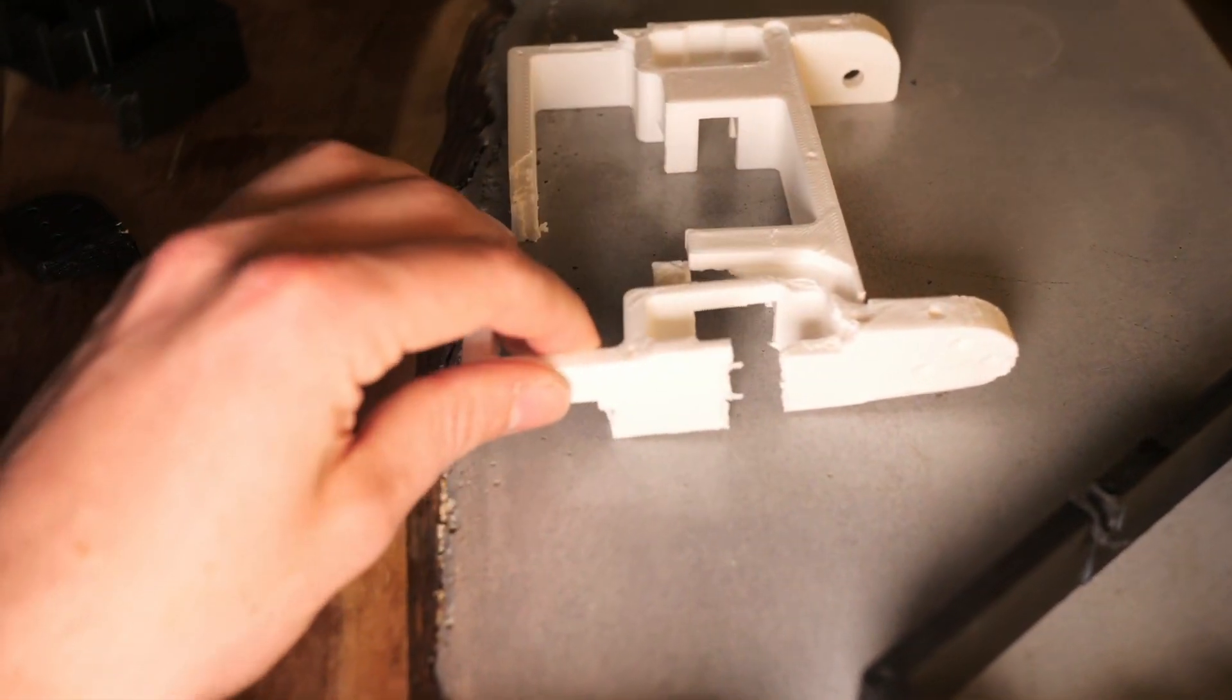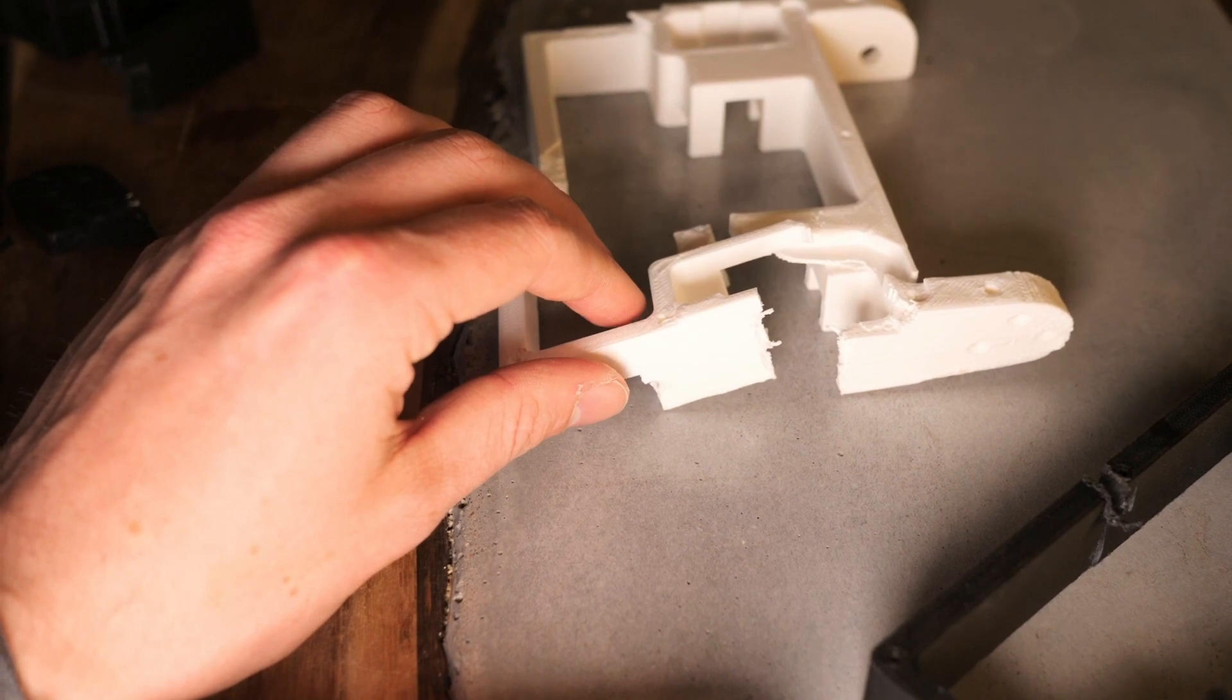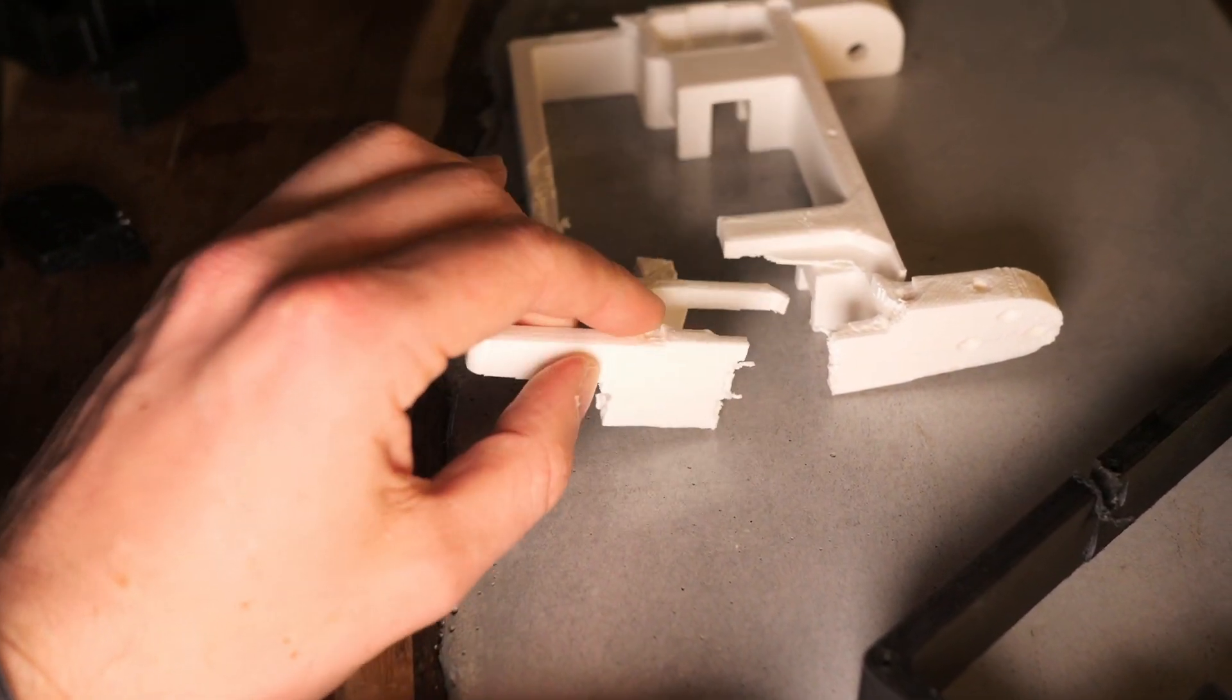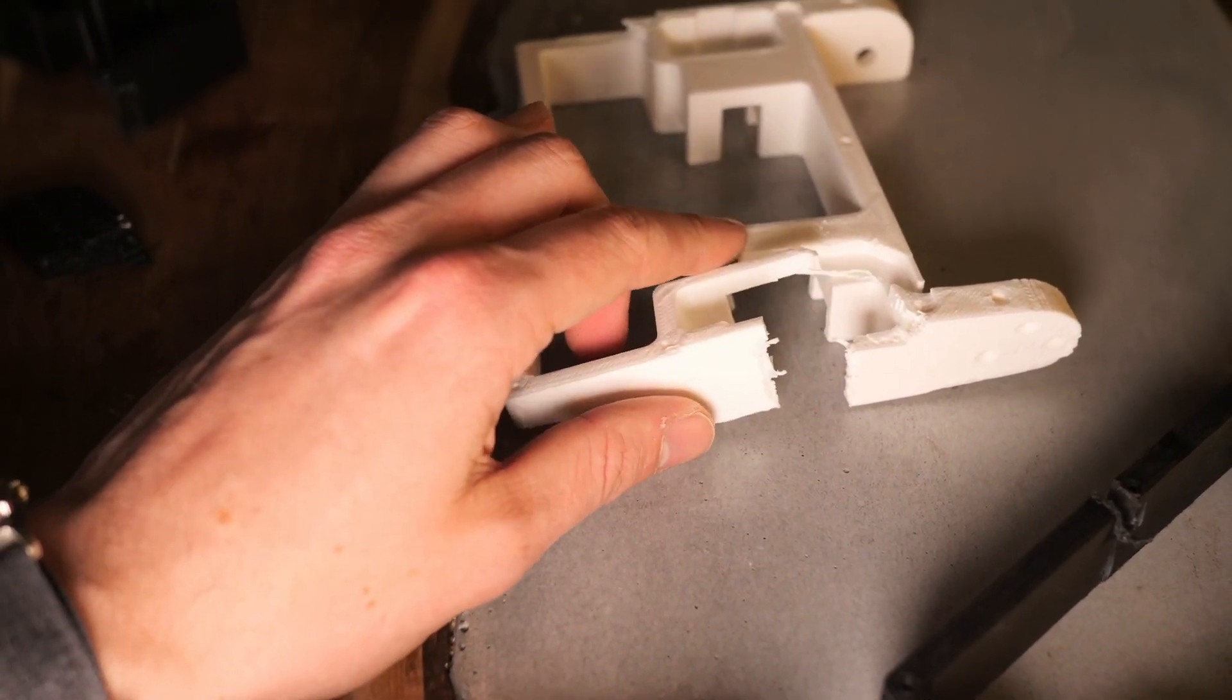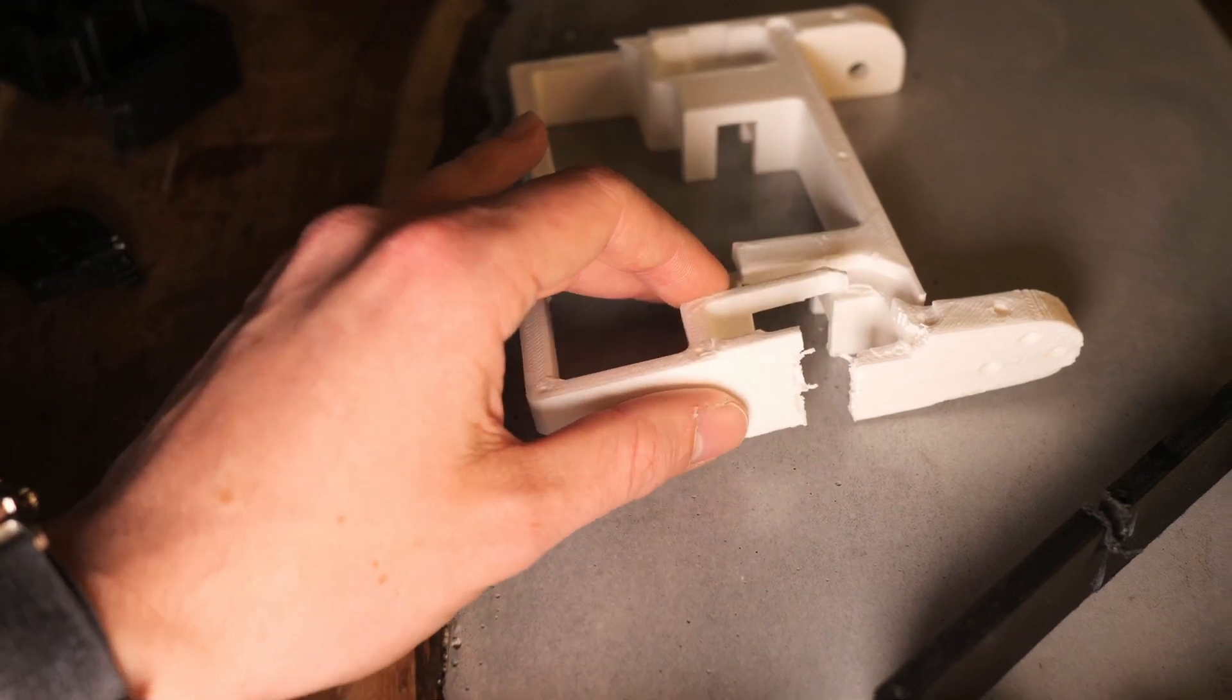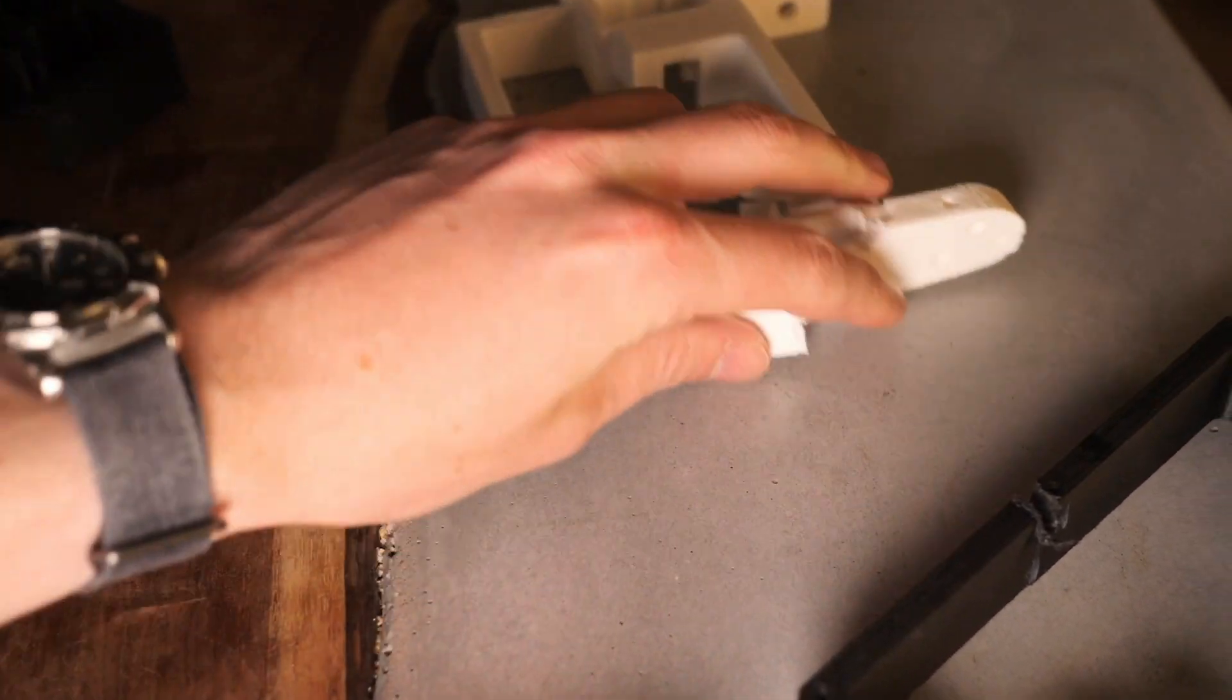Next we have the ABS, which where the blade impacted did break off and then it also split back here, where the inner portion of the frame, once there's enough bending on this piece, it ripped off entirely.